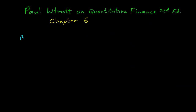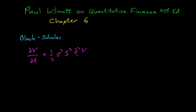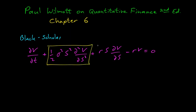Let's try to understand the Black-Scholes equation term by term. The equation is: partial of V with respect to t, plus one-half sigma squared S squared second partial of V with respect to S, plus r S partial with respect to S, minus r V equals zero. The first term is the change of the option price over time, and it has three components.